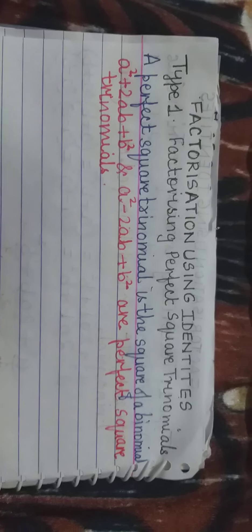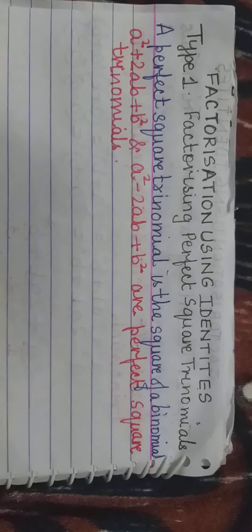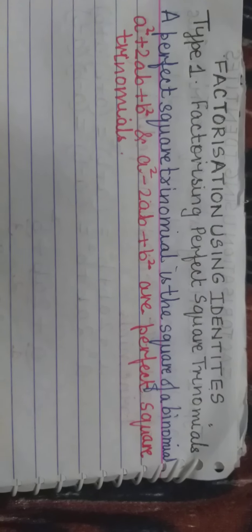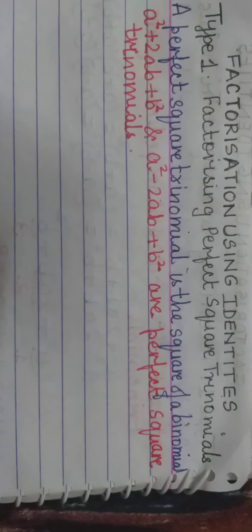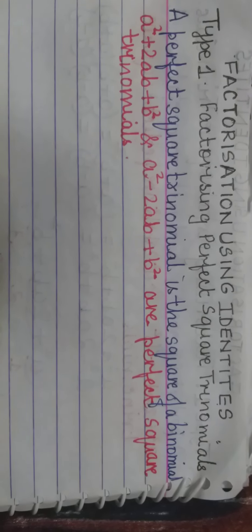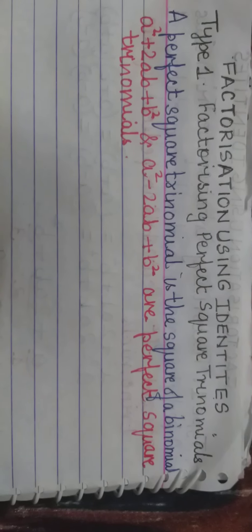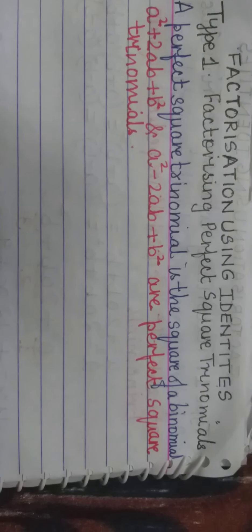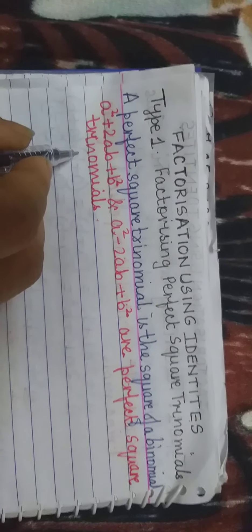Now what is a perfect square trinomial? It is the square of a binomial. Like a² + 2ab + b² and a² - 2ab + b² are perfect square trinomials. It contains 3 terms, so it is a trinomial. We have done this in the previous chapter on Algebraic Identities — you have proved it. Now it is the inverse of it.